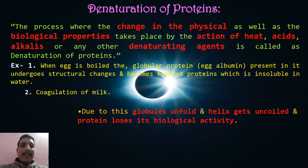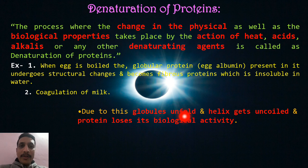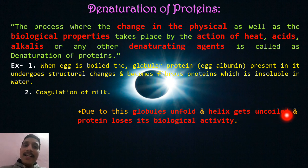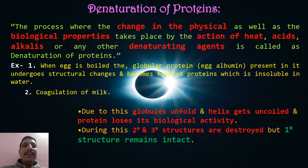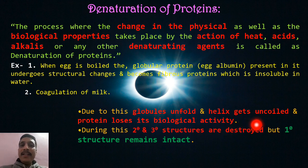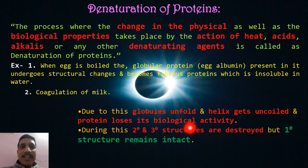During denaturation — boiling of egg or curdling of milk — the globules unfold. If the proteins are in globular form, they get unfolded; if the protein has a helix secondary structure, it gets uncoiled. The protein loses its biological activity. The secondary and tertiary structures are destroyed during denaturation. However, the primary structure remains intact — primary structure does not change during denaturation.